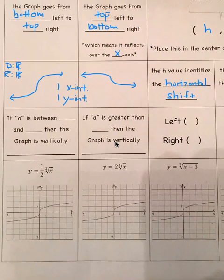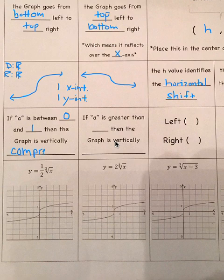If the absolute value of a is between 0 and 1, then the graph is vertically compressed. If the absolute value of a is greater than 1, then the graph is vertically stretched.